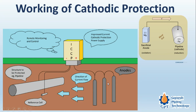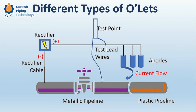A basic example from nature: when a lizard faces a threat, it immediately releases its tail. The tail becomes very active while the lizard stays still. The predator attacks and eats the tail, and the lizard remains safe. The same logic applies here — to protect the pipe, which is more important, we use a sacrificial anode, and this is how we can increase the life of the pipeline and reduce the rate of corrosion.